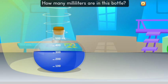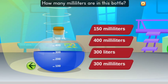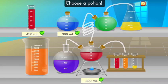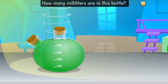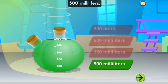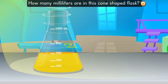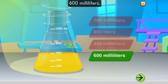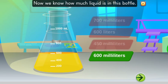How many milliliters are in this bottle? Three hundred milliliters. Well done, you got it right! How many milliliters are in this bottle? Five hundred milliliters. You are doing excellent! How many milliliters are in this cone-shaped flask? Six hundred milliliters. Now we know how much liquid is in this bottle.